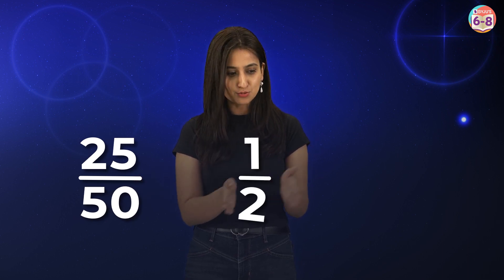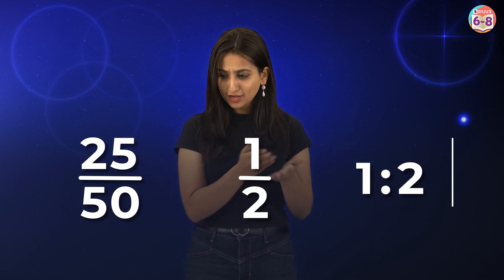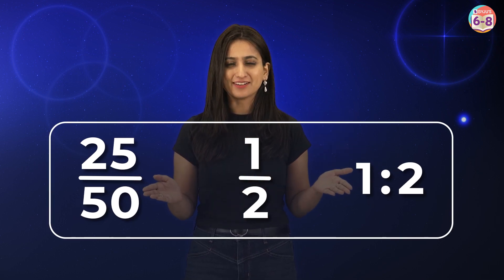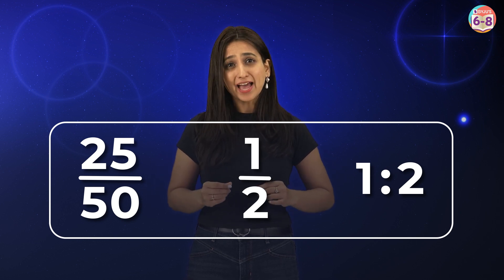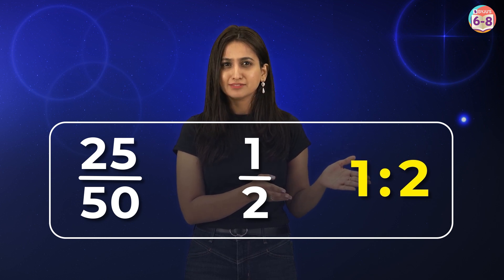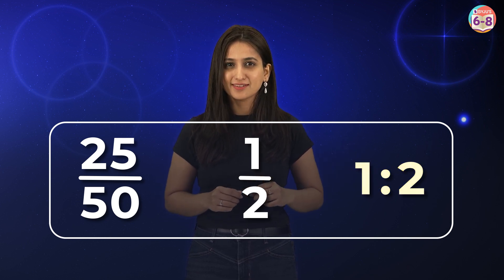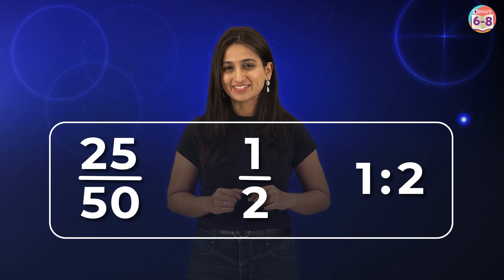25 by 50, 1 by 2, and 1 is to 2. They all look similar, don't they? Then why do we have all these different ways to represent them? The last one especially looks a bit different from the rest. Why and when do we use these representations?